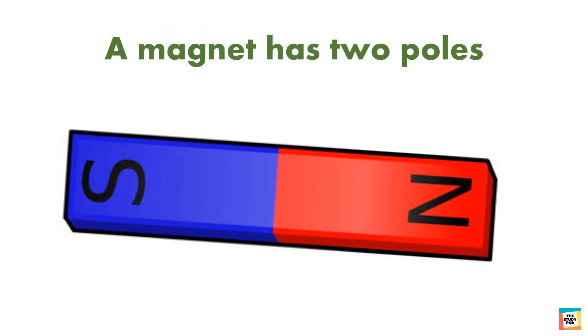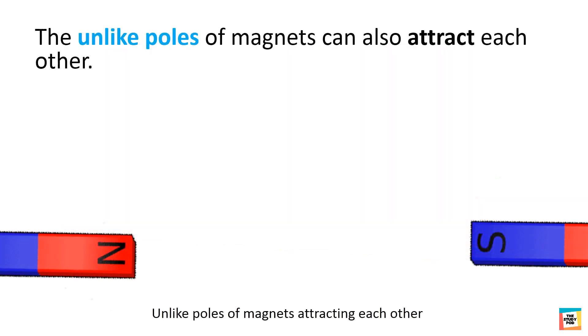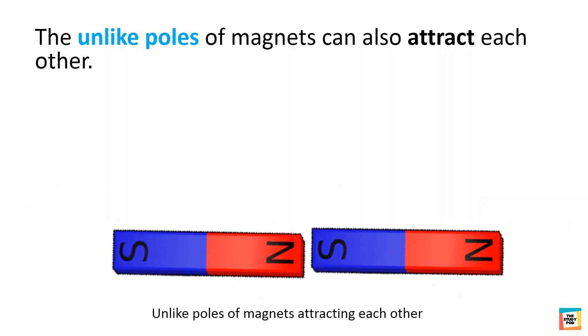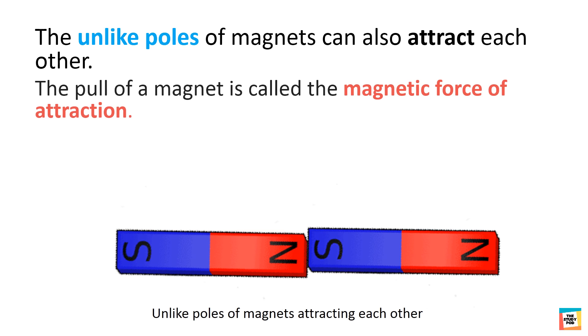A magnet has two poles, a south pole and a north pole. The unlike poles of magnets can also attract each other. The pull of a magnet is called the magnetic force of attraction.